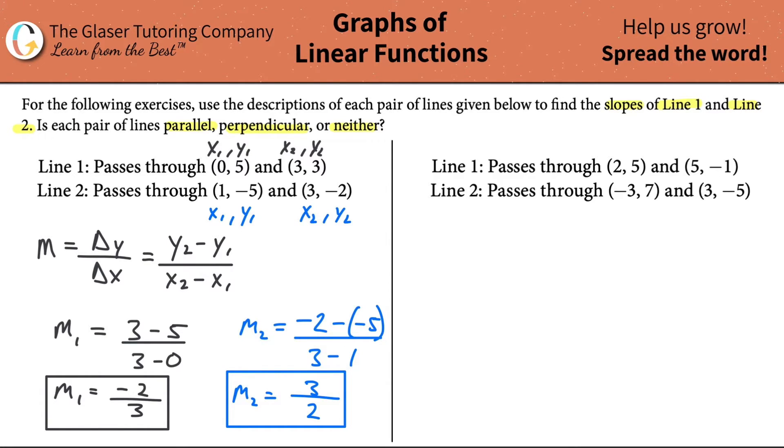Now that we have the slopes for each line, we have to compare the slopes of the two lines to one another. What is their relationship? First thing, in order for them to be parallel, they have to be the same exact thing. Are these identical? No. So, they're not parallel.